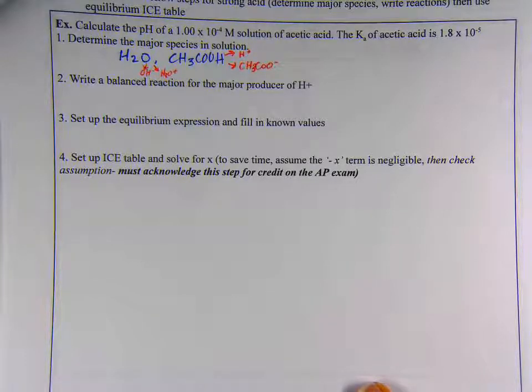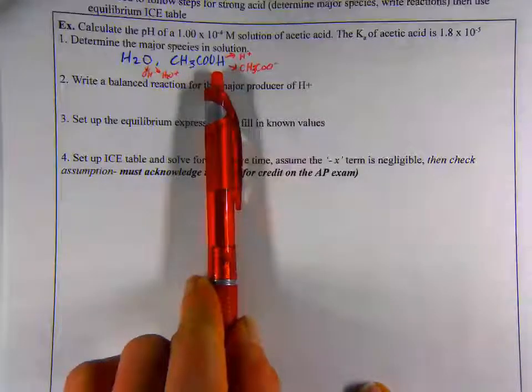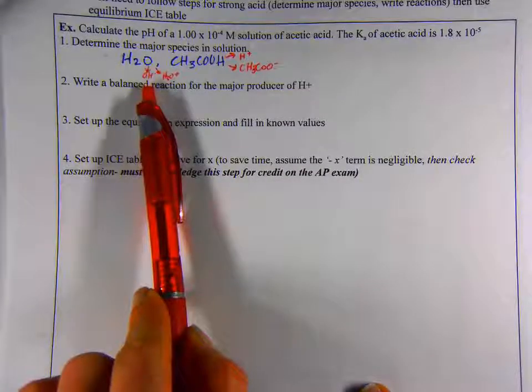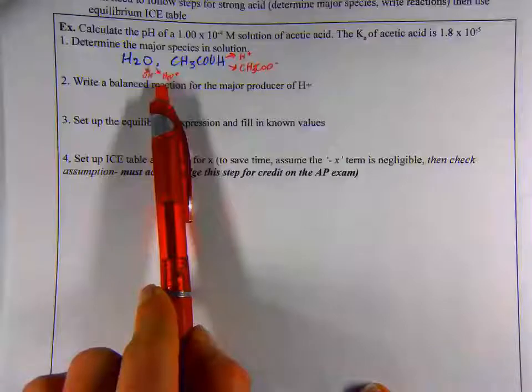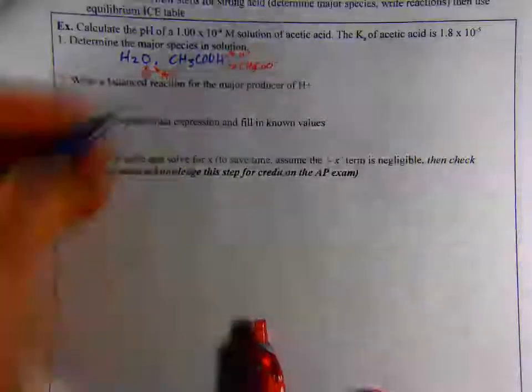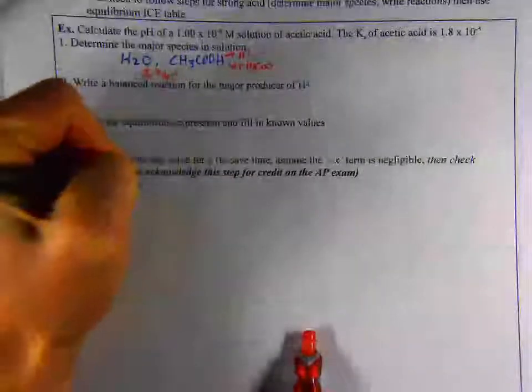Write a balanced equation for the major producer of H+. Anytime we have water with an acid, even if it's a weak acid, the acid is always going to be the major producer of H+. We can essentially ignore the fact that water is ionizing and just focus on the acid. The balanced chemical equation for what's happening with the H+, I'm actually going to write underneath here.